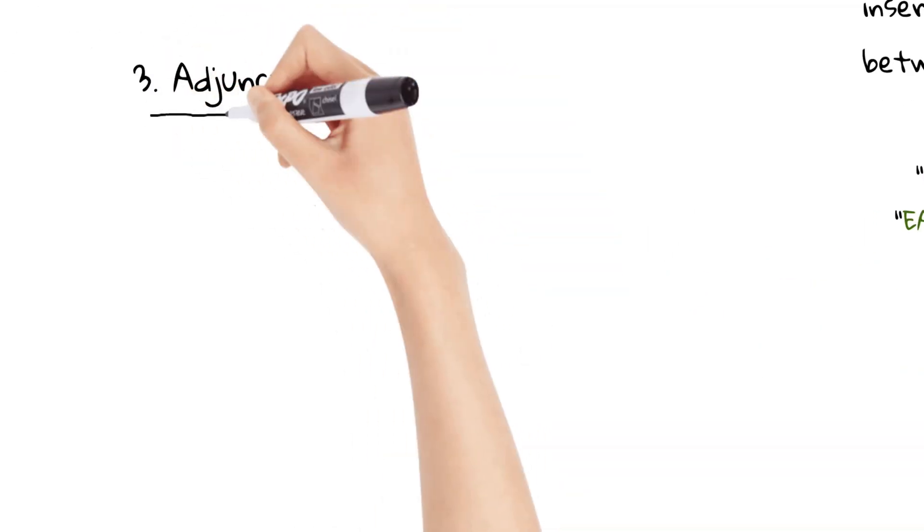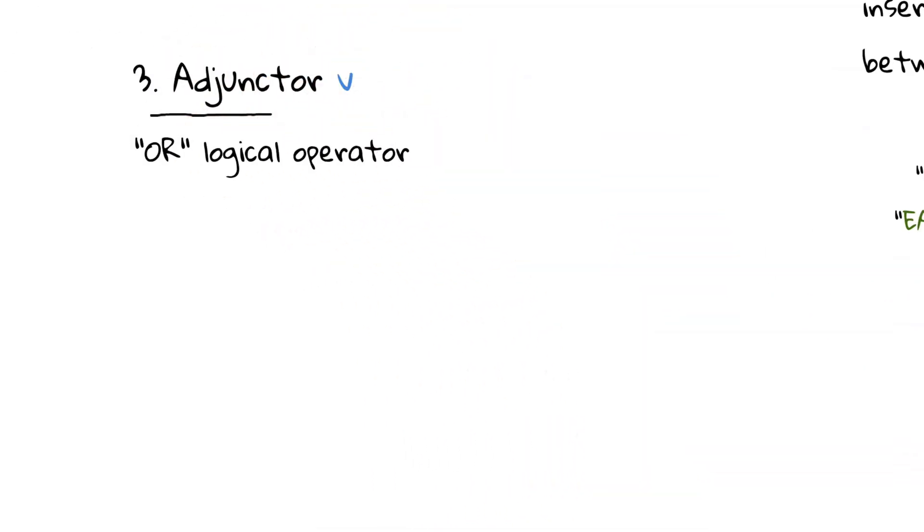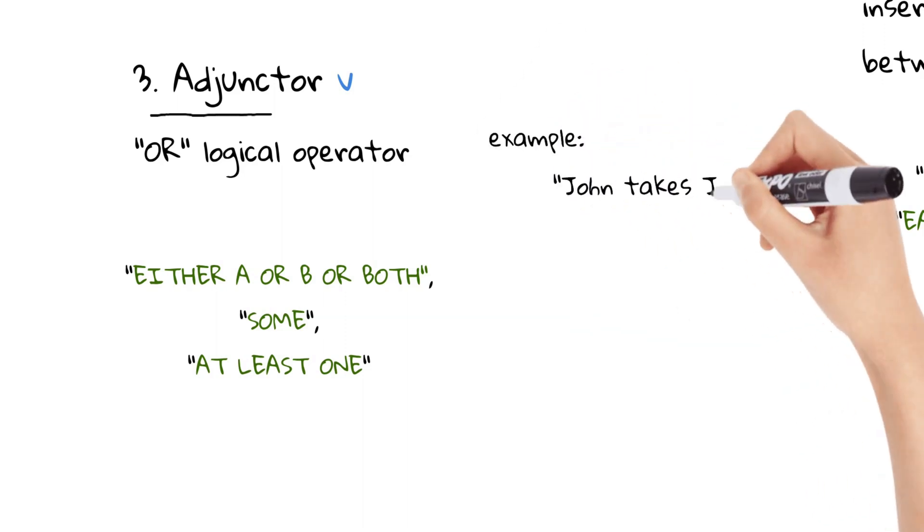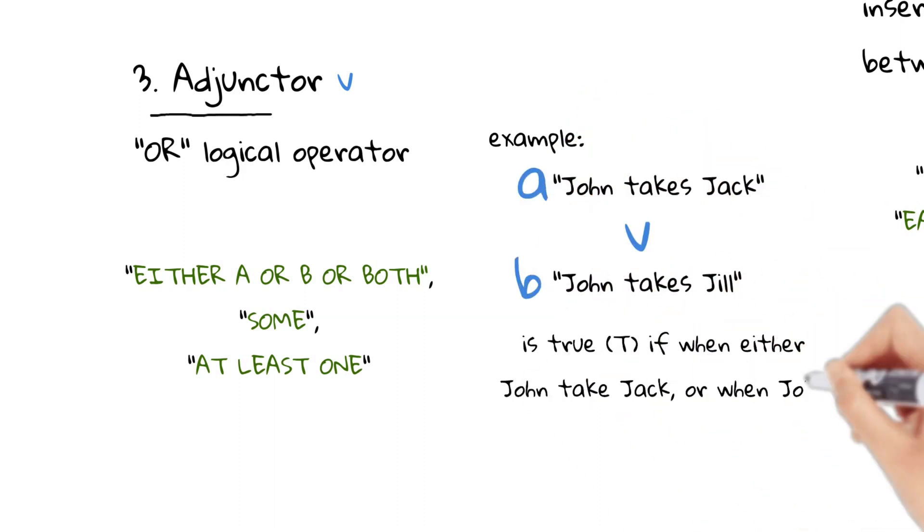Three, the adjunctor. A statement with an adjunctor can be understood as an OR statement. There are several ways of saying this, such as either A, or B, or both; some; and at least one. The adjunctor joins two propositions in a complex proposition that's true if, at least, one of the elementary propositions is true. Let's take an example. Imagine John, a parent of two young children, Jack and Jill. If only one child wanted to go to the playground, John would accompany him or her while the others stay at home. However, John would also be going if both of them wanted to go, A, or B, or both.